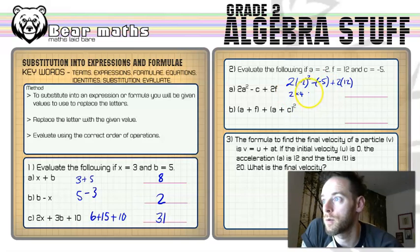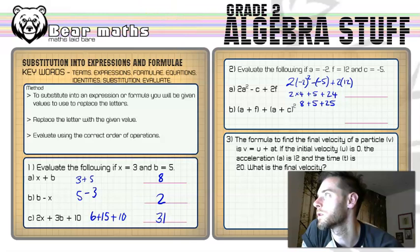Minus minus 5 would become plus 5, because two negatives stuck together makes a positive. And then we've got a plus 24. 2 multiplied by 12 is 24. 2 multiplied by 4 is 8. 8 plus 5 plus 24.